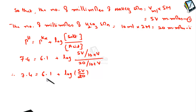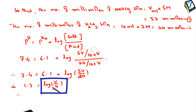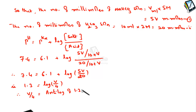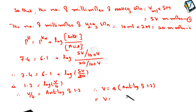So 7.4 minus 6.1 equals 1.3 = log(V/4) to base 10. Therefore V/4 = antilog(1.3), and V = 4 × antilog(1.3). By calculation, antilog(1.3) ≈ 20, so V = 4 × 20 = 80 ml. Adding 80 ml of 5 molar sodium bicarbonate solution to 10 ml of 2 molar carbonic acid solution maintains the blood pH at 7.4.